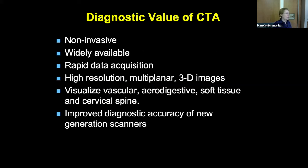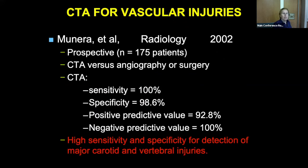CTA is non-invasive, very available, gives data back quickly, and with current generation CT scanners we have high-resolution images — you can visualize the vascular and digestive structures. Monero back in 2002 looked at CTA versus angiography and found 100% sensitivity and 100% negative predictive value for arterial injuries, especially major carotid and vertebral injuries. This goes along with everything we've been saying about identifying arterial injuries.